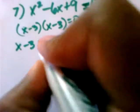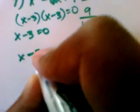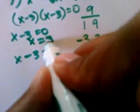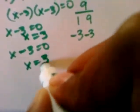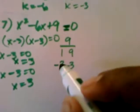I'm going to have x minus 3 times the quantity of x minus 3. Set them both equal to 0. This one would equal x equals 3. And this one would be x equals 3 as well.